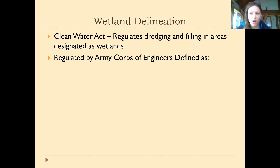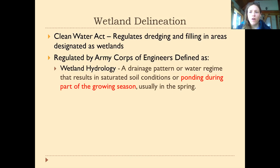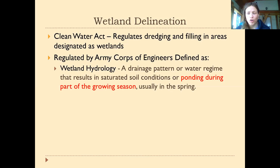The Army Corps of Engineers — a federal branch of the army involved in a lot of water management — is the group that manages many of the wetlands protected under the Clean Water Act. Under their specific definition, wetlands are areas that first experience wetland hydrology. Hydrology refers to the water behavior in an area, so they have a drainage pattern or water regime that results in saturated soil conditions — meaning the soil has no air in its pore spaces, all pore spaces are filled with water.